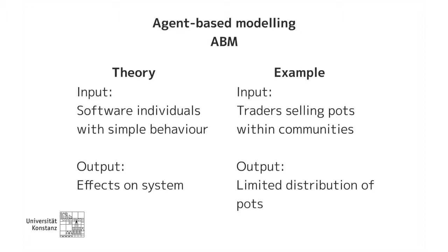In this case study, the software individuals are the traders, and they sell pots. The traders are connected within communities, and the community structure will determine the flow of information and goods. The output will be the distribution of pots, which we can compare with the archaeological record. A couple of important things in agent-based modeling: the whole is greater than the sum of its parts. You have individuals running around guided by very simple rules, but collectively giving rise to slightly more complex behavior that can't just be understood by looking at individual rules or properties alone.